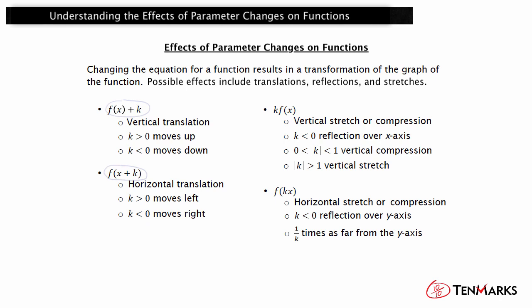When the absolute value of k is between 0 and 1, it is a horizontal stretch. And when the absolute value of k is greater than 1, it is a horizontal compression. Notice the difference between these two transformations: if the k value is multiplied by the function value, it is a vertical stretch or compression; if the k value is multiplied by the x inside the parentheses, it is a horizontal stretch or compression.